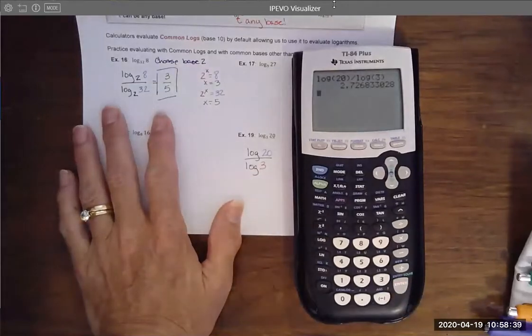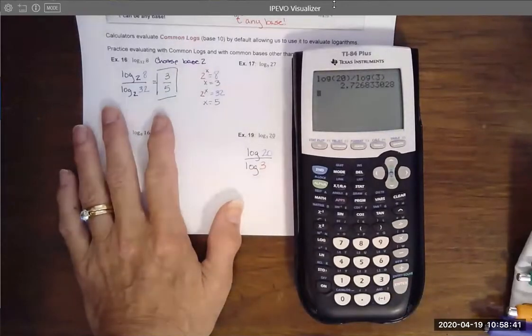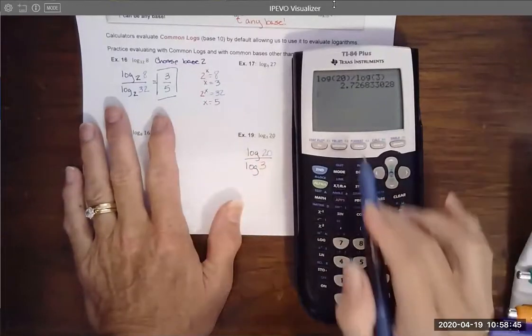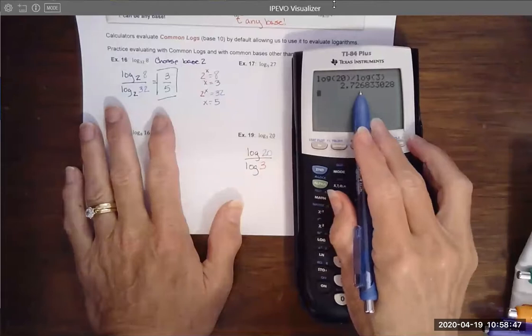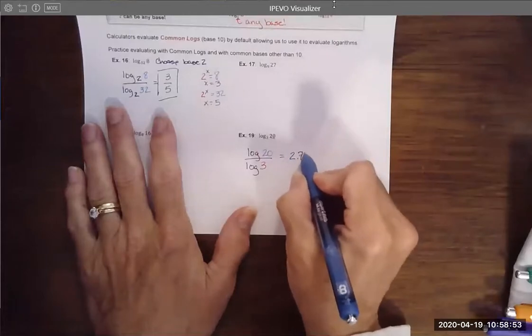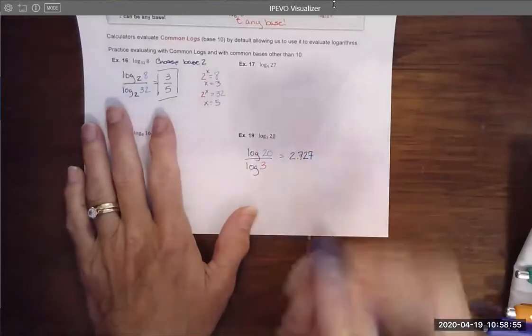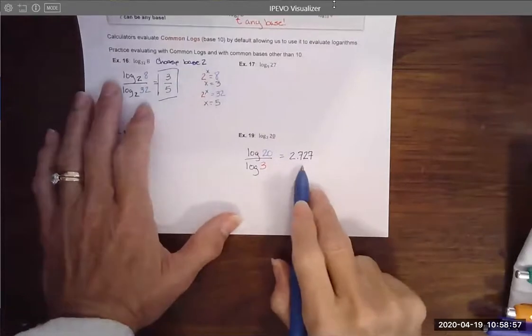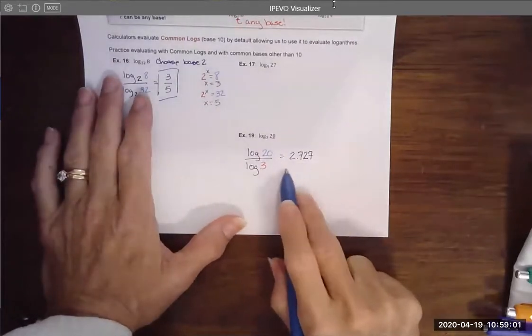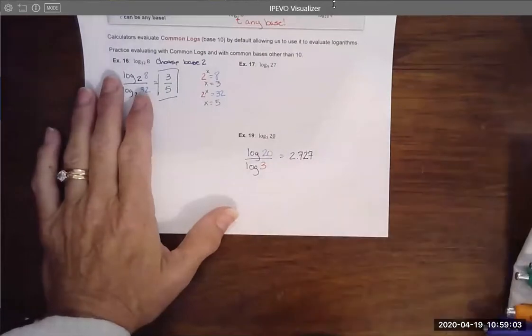I have a nice decimal representation for what this logarithmic statement would be. 2.727. If you use good rounding, 2.727.